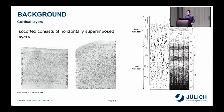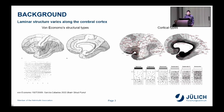The isocortex is a layered structure. It consists of layers stacked on top of each other, each with their own unique microstructure and function, usually described as six layers. What has been realized from early histological studies is that this laminar structure is not consistent across the global cortex — it varies a lot. Characterizing this variation has been an important focus of the field over the past century.